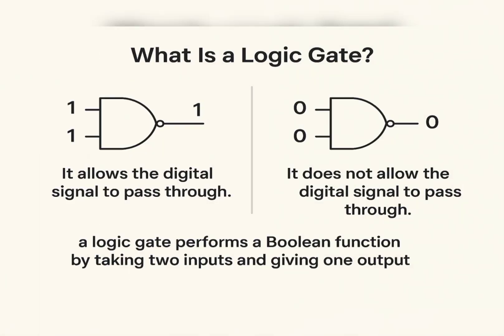What are logic gates? Consider a logic gate: we give two inputs and get one output. For example, giving one and one as input — since one represents on — this logic gate gives us an output of one, allowing the data signal to pass through. Giving zero and zero as input — since zero represents off — this logic gate gives us zero as output, not allowing the data signal to pass through. When we give inputs to a logic gate, it performs a Boolean function and gives us an output.